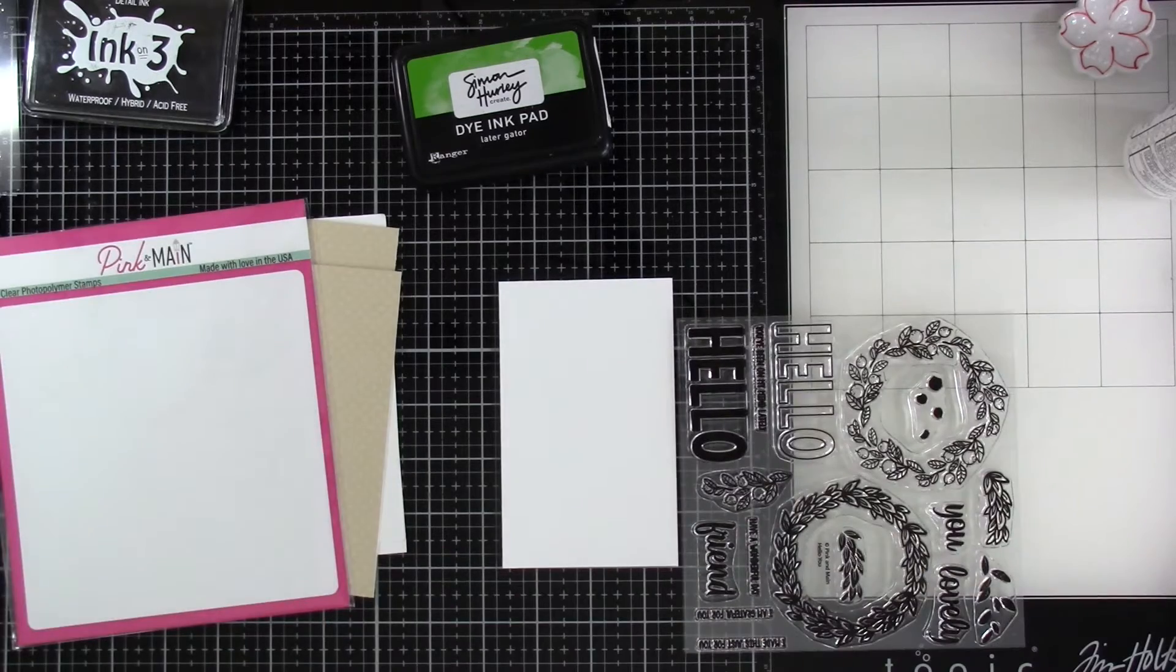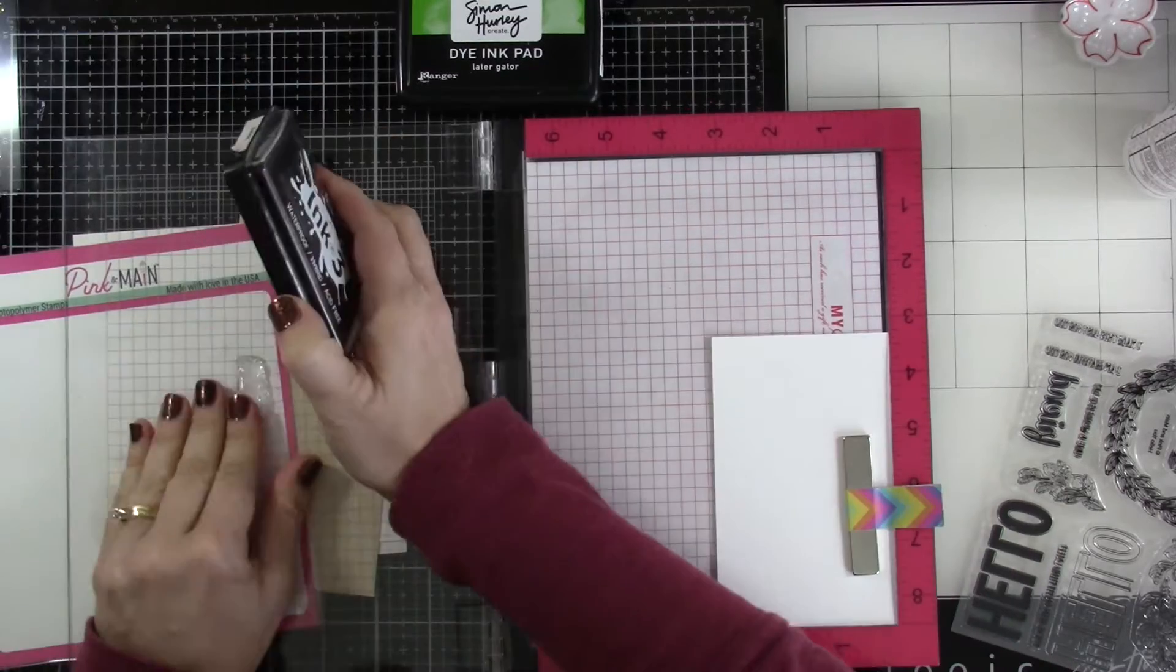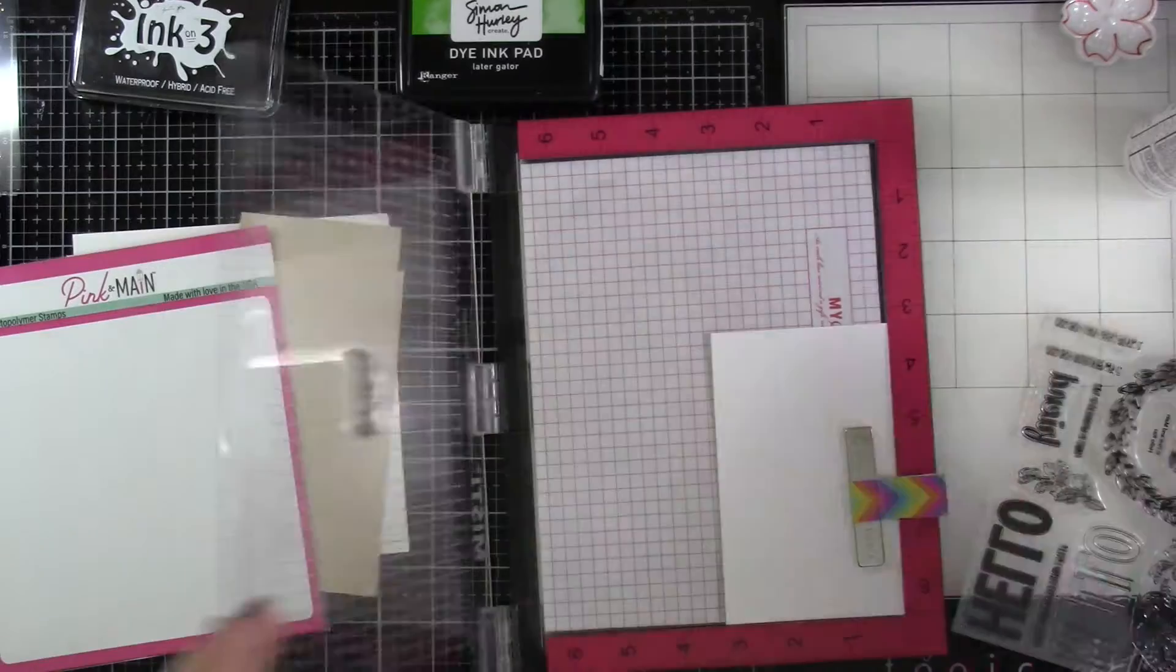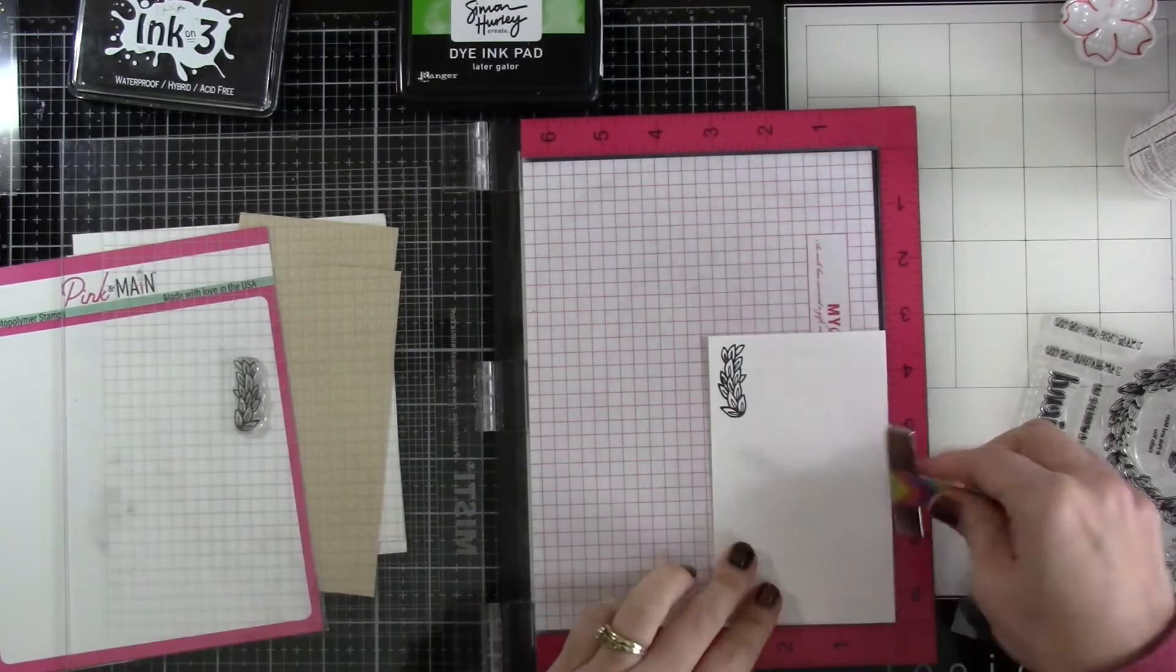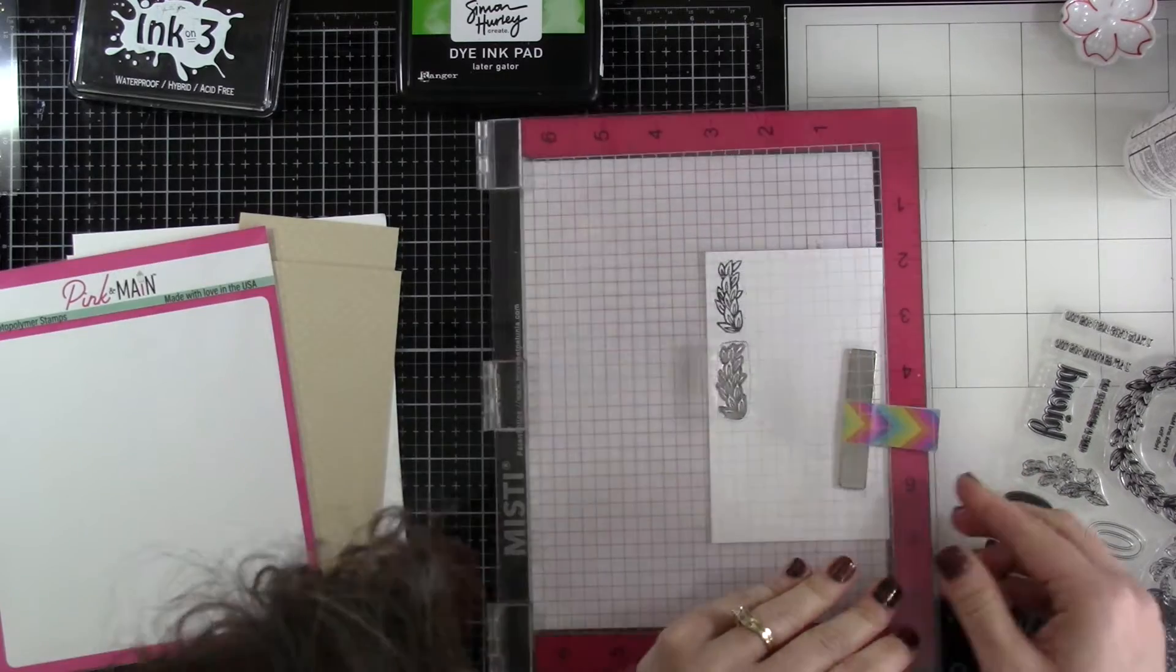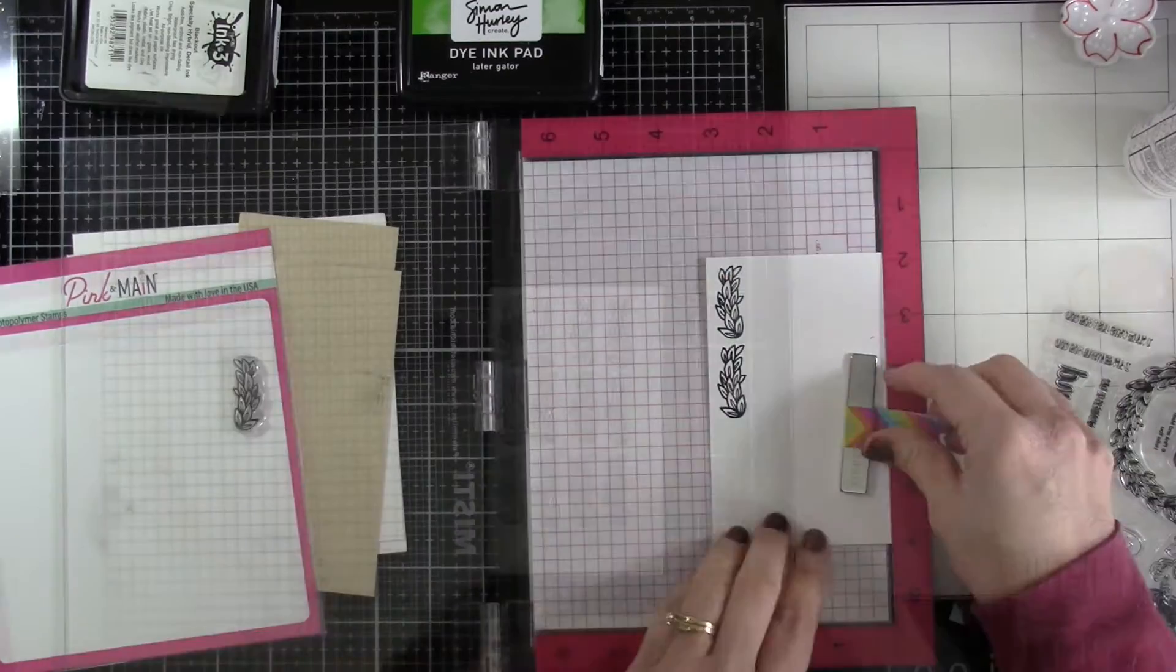As far as I know, this kit is still available, so I'll have it linked down below. But we're going to start with doing a bunch of stamping. I'm going to be making some mini slim lines with our first cards, and so I'm just going to move this piece of cardstock around so that I can get a bunch of these leaves stamped out using some Ink on 3 blackout ink.